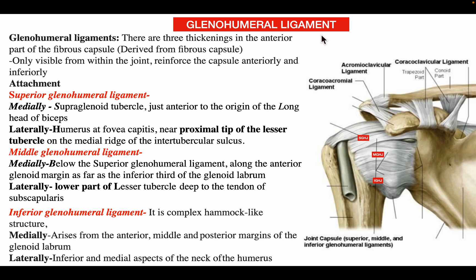The glenohumeral ligaments are three thickenings in the anterior part of the fibrous capsule, derived from it, and visible only from the interior of the joint. They provide support to the capsule from the anterior and inferior aspect. The three glenohumeral ligaments are the superior, middle, and inferior glenohumeral ligaments.